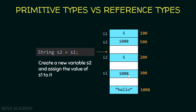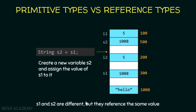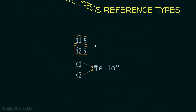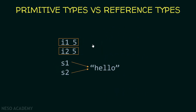So s1 and s2 are different variables, but they reference the same value "hello". To summarize: with primitive types, each variable is a box containing its own value — i1's 5 and i2's 5 are independent. But with reference types, s1 and s2 reference the same value. We'll see more details about this later, but that's the key idea. Thanks for watching and I'll see you in the next video.